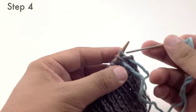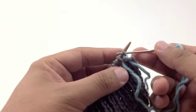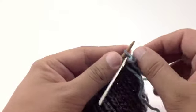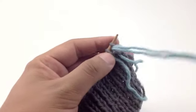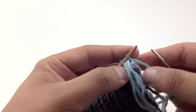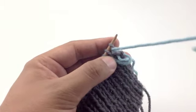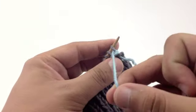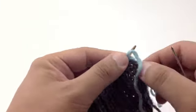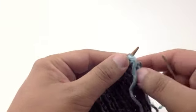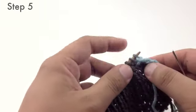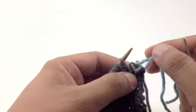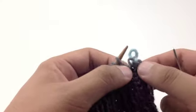For step four we're going to insert our tapestry needle back into the purl stitch, which is the first stitch on our needle, and go purl-wise and pull that tight. We want to make sure that our yarn is coming always over the top here. For step five we're going to slip both the purl stitch and the knit stitch off of our needle, and then just give that a little snug tug.